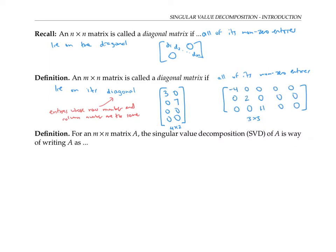For an m by n matrix A, the singular value decomposition, abbreviated SVD of A, is a way of writing A as a product of a matrix U, a matrix sigma, and a matrix V transpose, where sigma is an m by n diagonal matrix, V is an n by n orthogonal matrix, and U is an m by m orthogonal matrix.